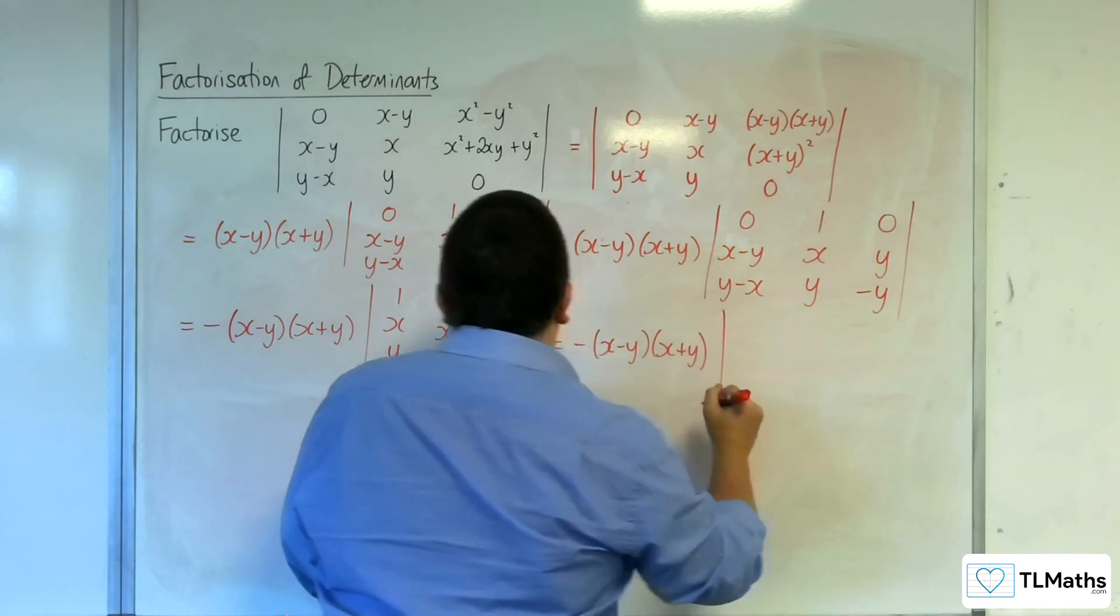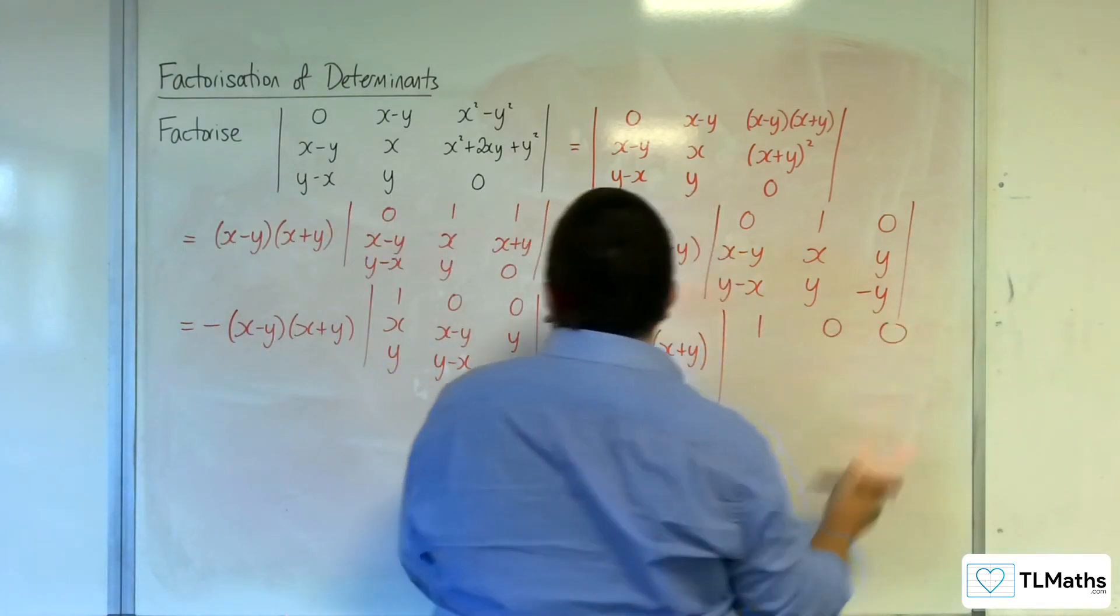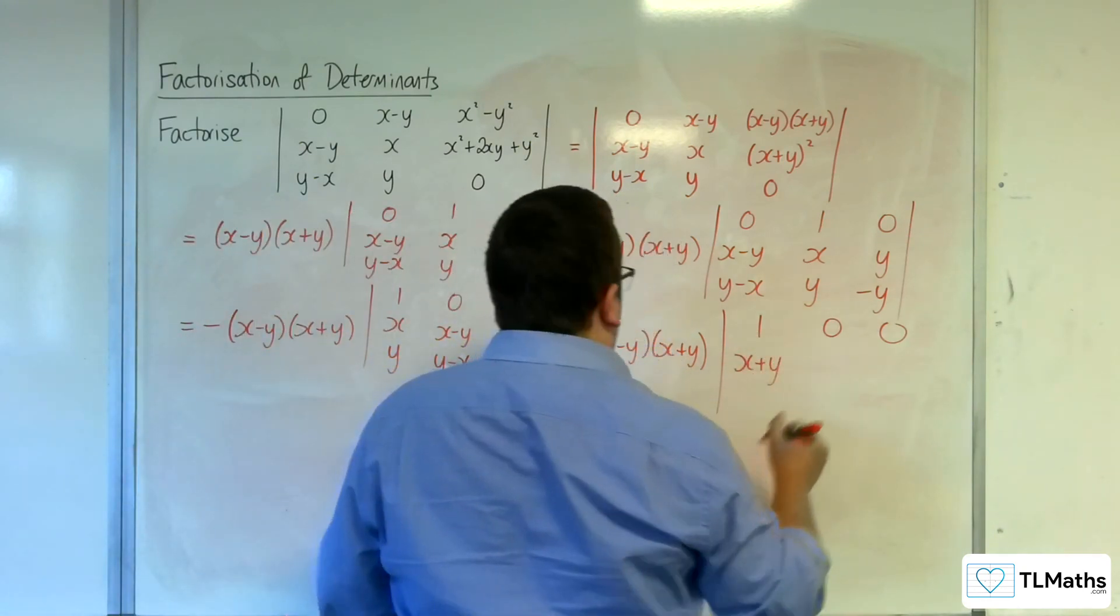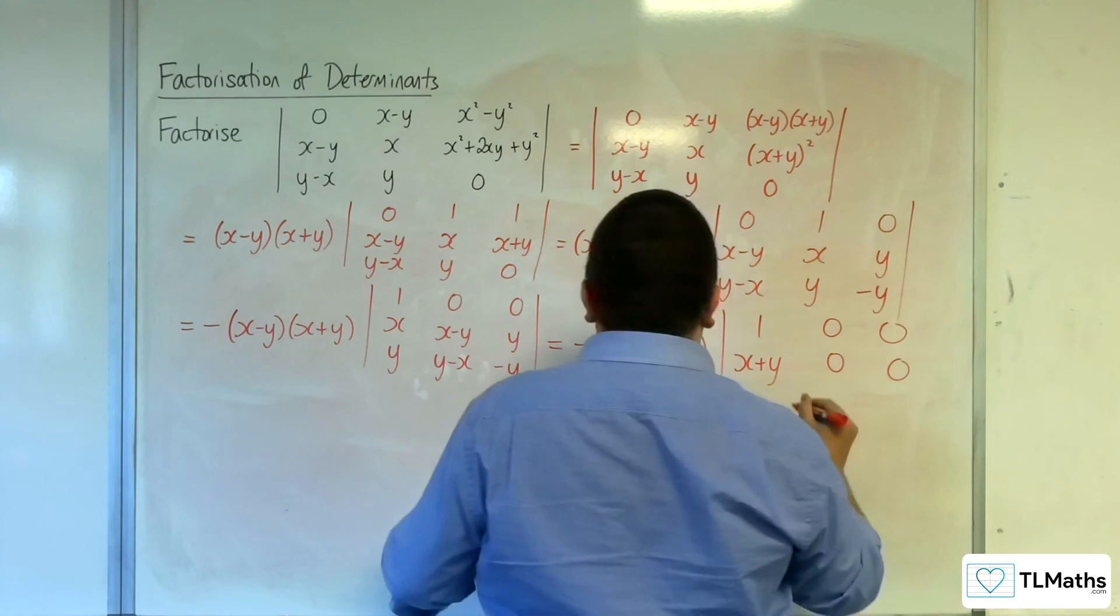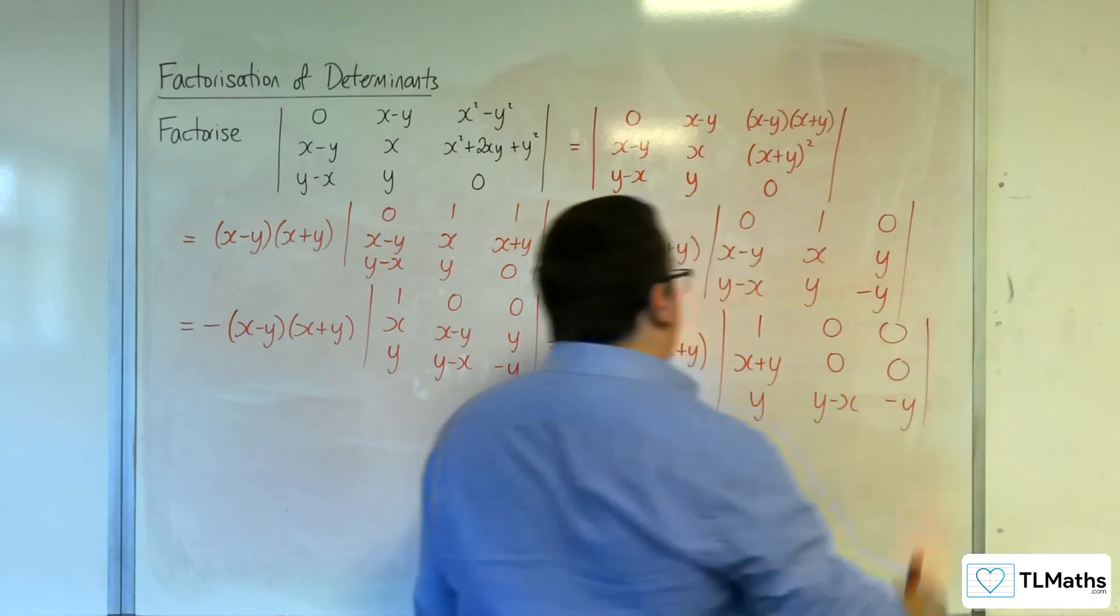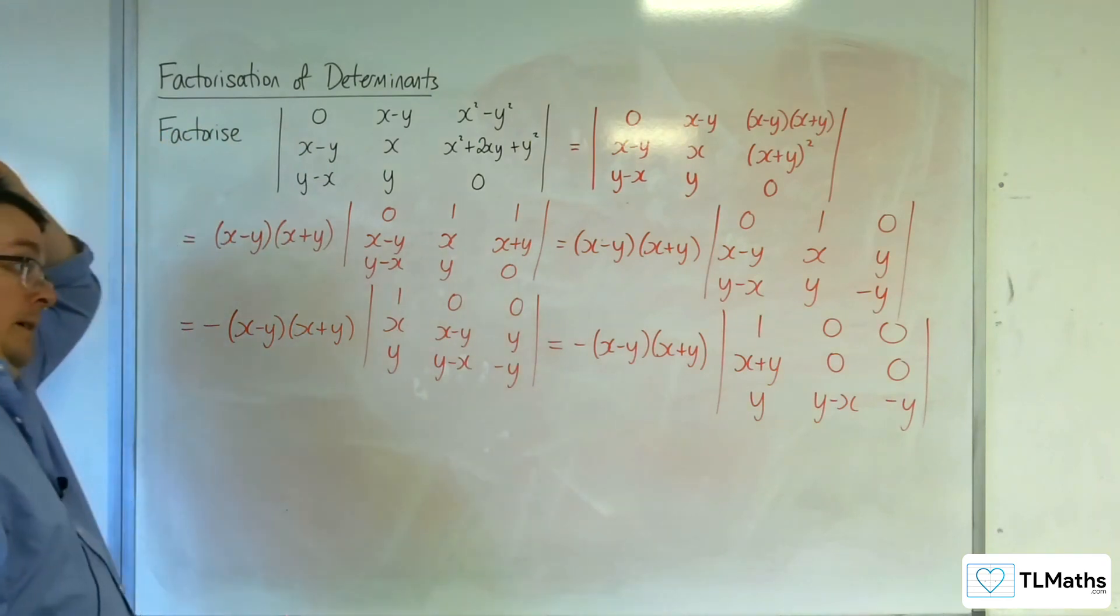So I'm going to have minus (x-y), (x+y). And then I'm going to have 1, 0, 0 in the top. (x+y). Then I'm going to have 0, 0, y, (y-x), minus y.